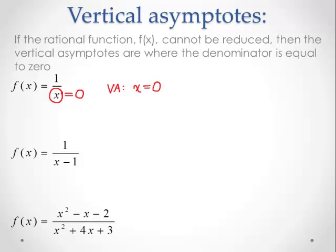We always want to write the vertical asymptote as an equation — the equation for a vertical line. So x equals zero is a vertical line at x equals zero on the xy-plane. For the second example, we have one over x minus one. We look at the denominator x minus one and solve for when it equals zero: add one to both sides, and we get x equals one. So the second function has a vertical asymptote at x equals one.